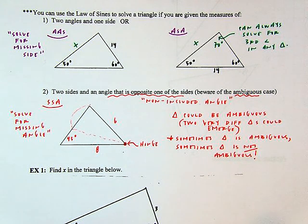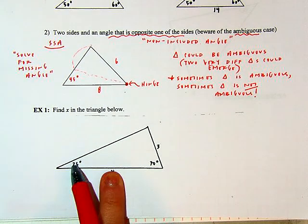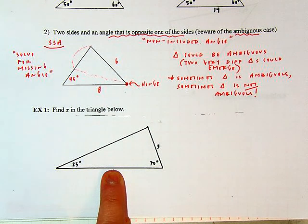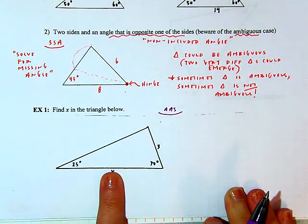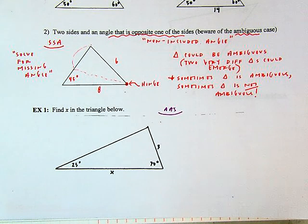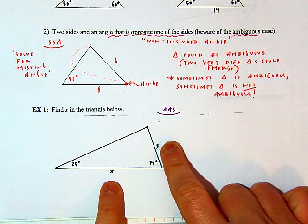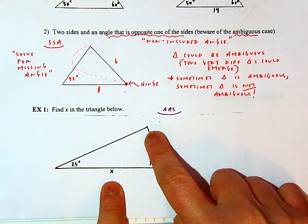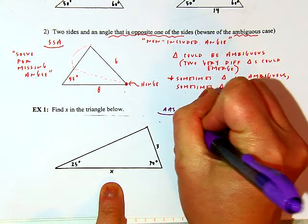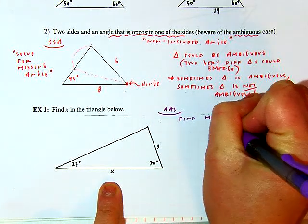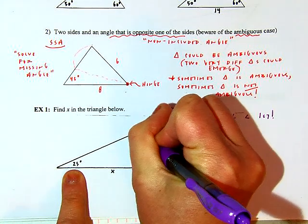First example: find X in the triangle. What's marked are two angles and a side — angle-angle-side. To use the law of sines I need an angle with a side opposite. Where the 25 is there's a side opposite, but to solve for X I need its opposite angle. Since I have two angles — 70 and 25, totaling 95 — the third angle must be 85. I find the missing angle first.